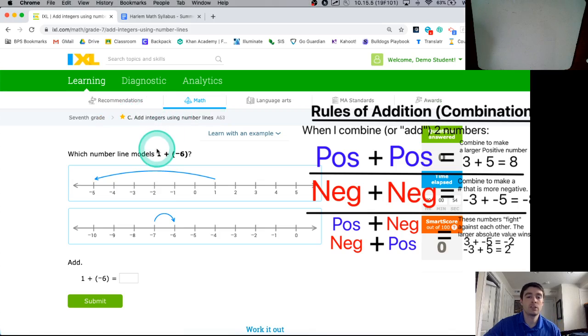As the title suggests here, they're going to use number lines to help us understand the ideas or the concepts behind adding negative and positive numbers together. Throughout this assignment, they're going to give you examples of problems. The first one they give you is positive 1 plus negative 6 and they're going to ask you to pick out number lines that show you what's going on.